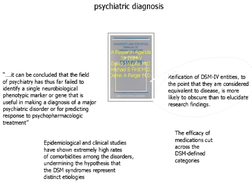Furthermore, it was said that epidemiological and clinical studies have shown extremely high rates of comorbidities among the disorders, undermining the hypothesis that DSM syndromes represent distinct etiologies. In addition, the efficacy of medication cuts across DSM-defined categories. This is given as an example for SSRIs as being effective both for anxiety and depression, so from a pharmacological point of view there is no distinction between these entities.